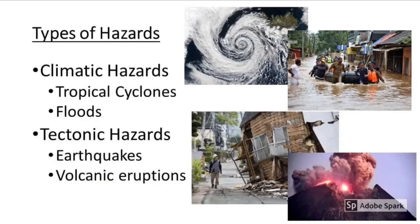In this chapter, one of the key things we need to be clear about is that there are different types of hazards you need to learn to identify and classify. There are two main general categories: climatic hazards and tectonic hazards.